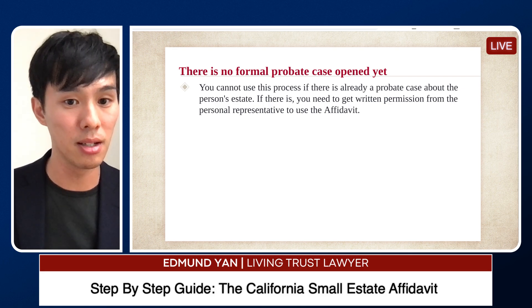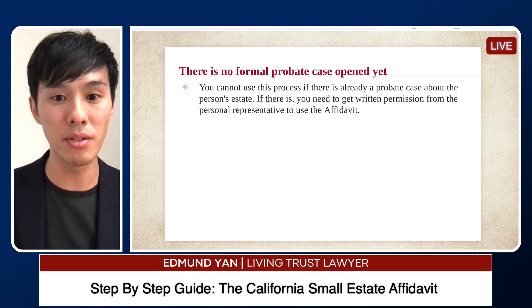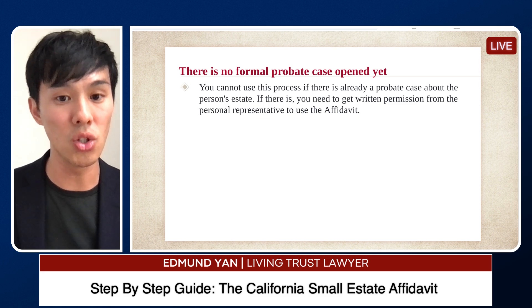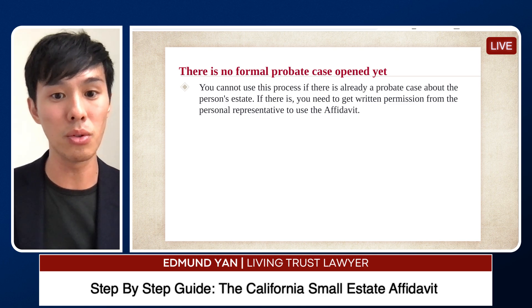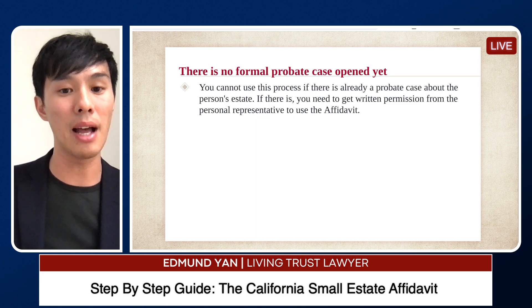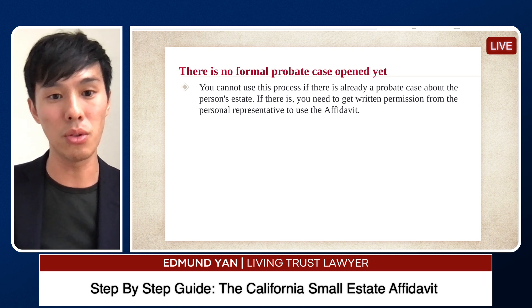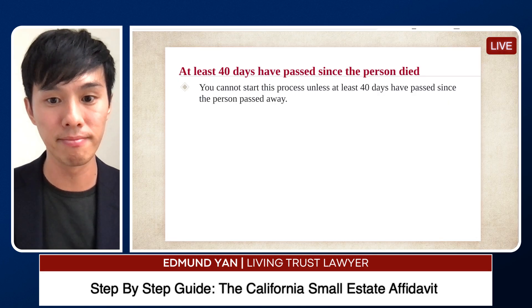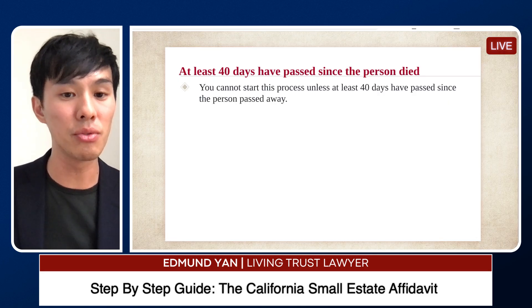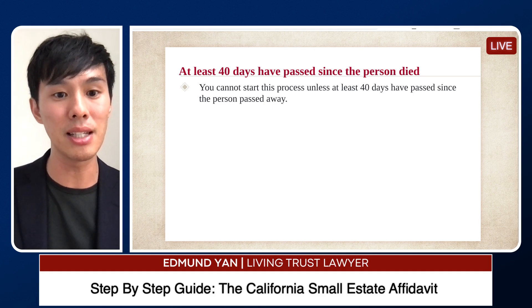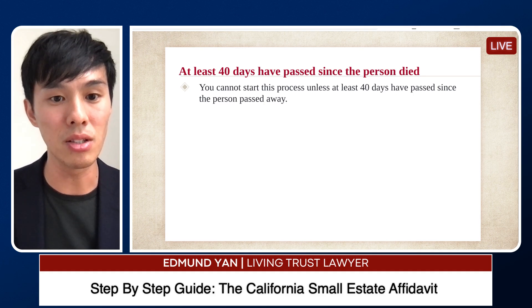Another criteria for using the small estate affidavit: there cannot be any formal probate case already opened for that person. If there is a probate case open, you need to get written permission from the personal representative to use the affidavit. Also, you have to wait at least 40 days since the person died before you can submit the small estate affidavit to the financial institution.